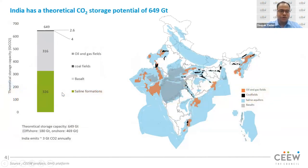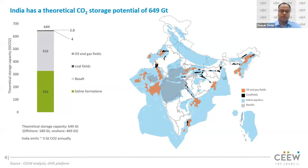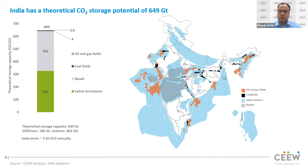The total theoretical CO2 storage capacity in India is around 649 gigatons — broadly in saline formations and basalts. Oil and gas fields have a theoretical CO2 sequestration capacity of about 2.6 gigatons, and coal fields around 4 gigatons. India emits about 3 gigatons of CO2 every year, meaning we have significantly more CO2 storage potential than our annual emissions. On the right, we show a geographical mapping of CO2 sequestration reservoirs.